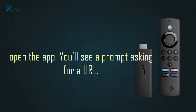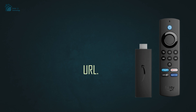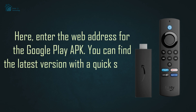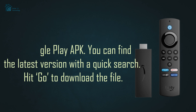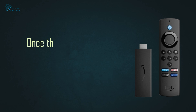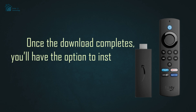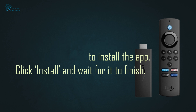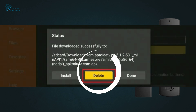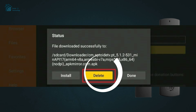You'll see a prompt asking for a URL. Enter the web address for the Google Play APK. You can find the latest version with a quick search. Hit Go to download the file. Once the download completes, you'll have the option to install the app. Click Install and wait for it to finish. After the installation, you can delete the APK file from the Downloader app to free up some space.